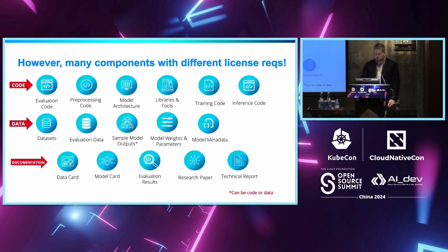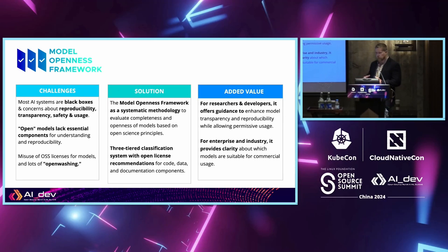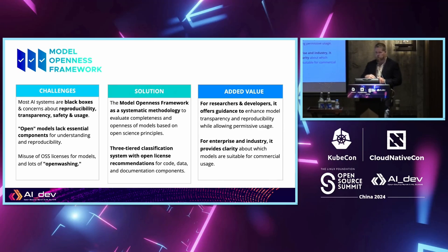We're trying to address the challenges around transparency. The movement toward black box deployments — ChatGPT, GPT-4, Claude 2, and so forth — has clouded transparency and created concern around safety and security. We stepped in with the Model Openness Framework, which is a three-tiered classification system that evaluates code, data, and documentation components. It's geared toward model developers or producers, with the audience being downstream consumers of models. It also bridges the gap between AI researchers unfamiliar with open source and the open source community not familiar with AI.